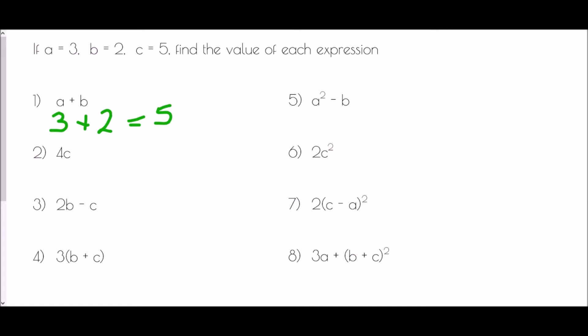We just need to remind ourselves what 4c actually means. In algebra, if we have a number in front of a letter, it means multiplication — we have four lots of c. So this is 4 times whatever c is. Well, c is 5, so 4 times 5 gives us 20.